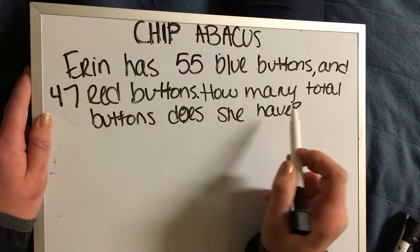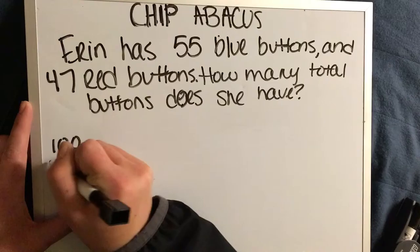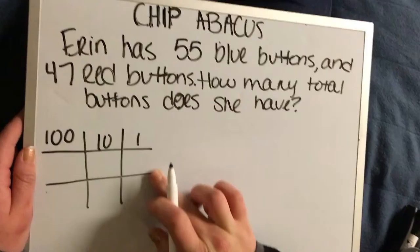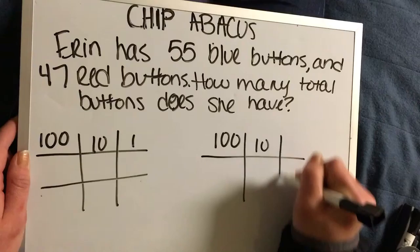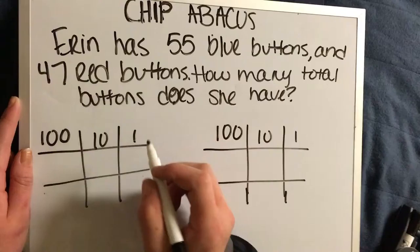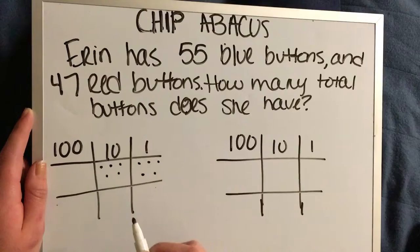All right, so the problem reads: Erin has 55 blue buttons and 47 red buttons. How many total buttons does she have? So again we're gonna make the table with the hundreds column and the tens column and the ones and the row, and we're just gonna make the next table already as well to save some time later.